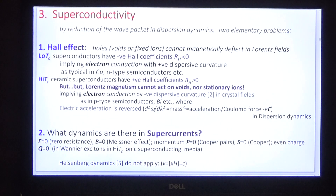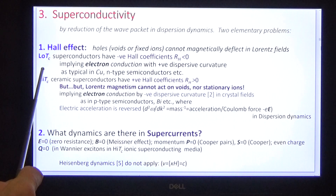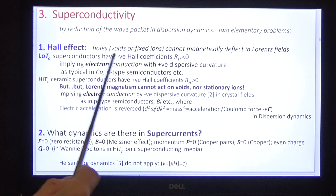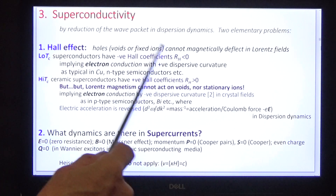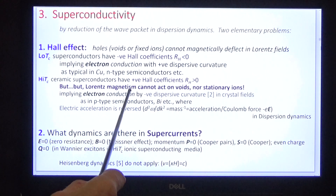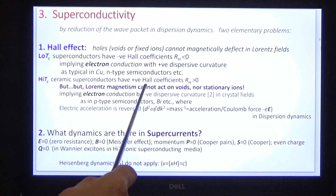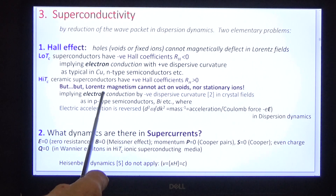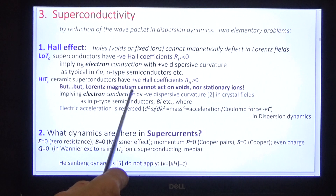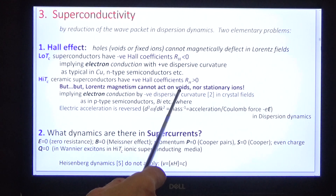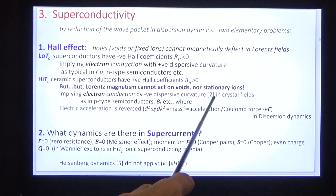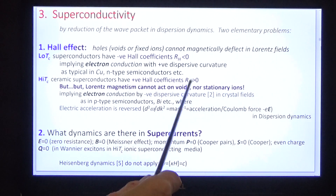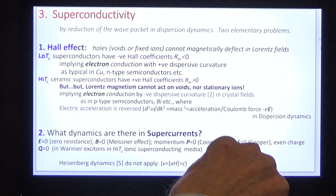I go on to superconductivity. There are two types of superconductor: low Tc and high Tc. The low Tc have negative Hall coefficients which are regular. The high Tc have positive Hall coefficients. The mathematicians say that's because they have holes. But the problem is: how does Lorentz magnetism act on voids or stationary ions? Well, it doesn't, and we need a better explanation.